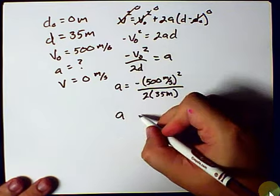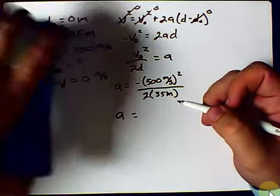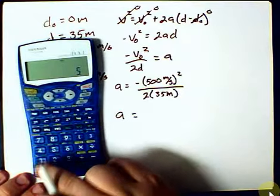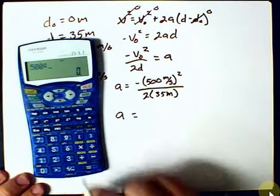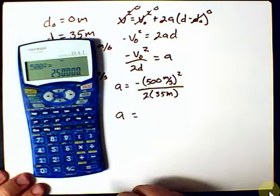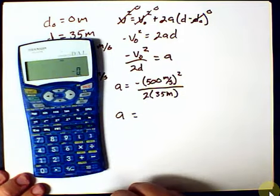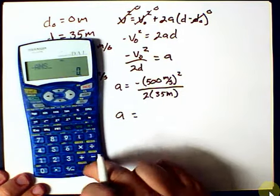All right, so my acceleration is, I'm going to go 500 squared equals that. And I want the negative of that, so negative of my answer.